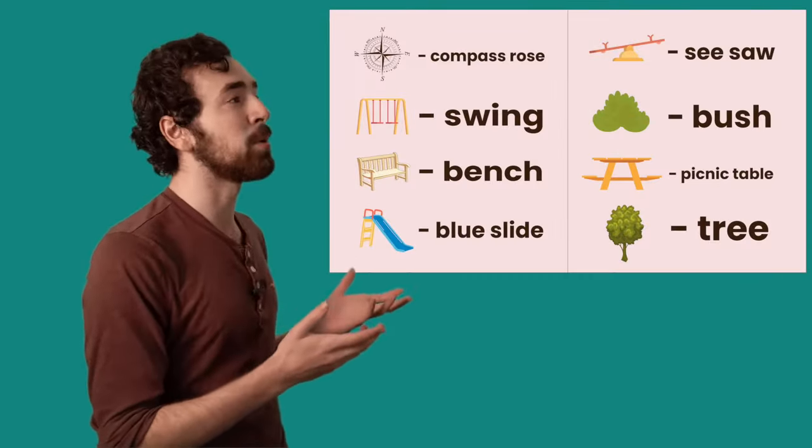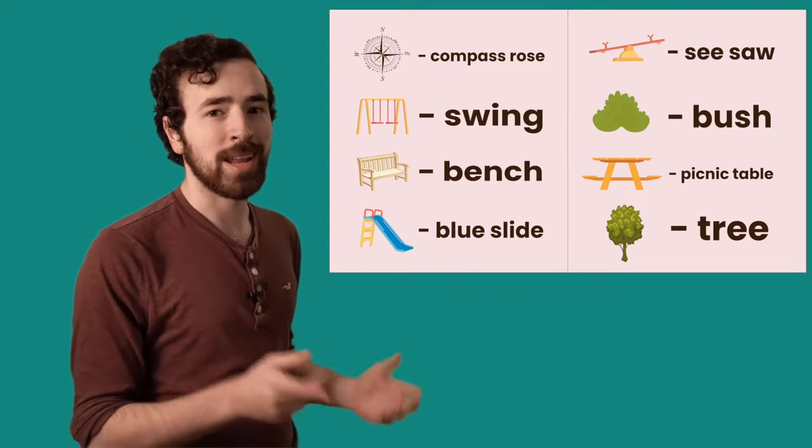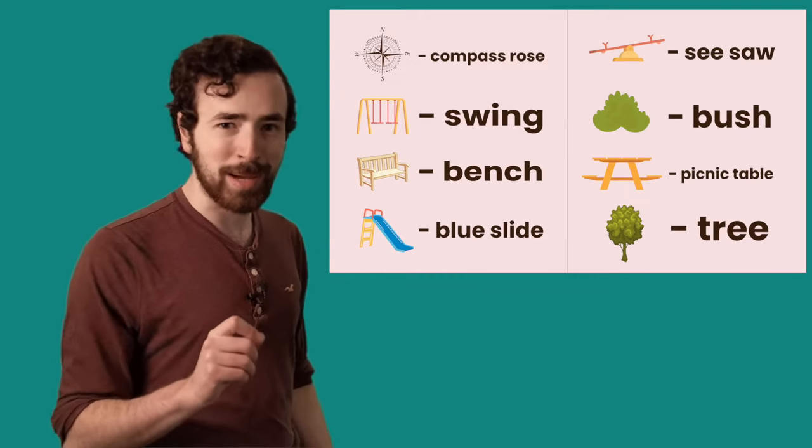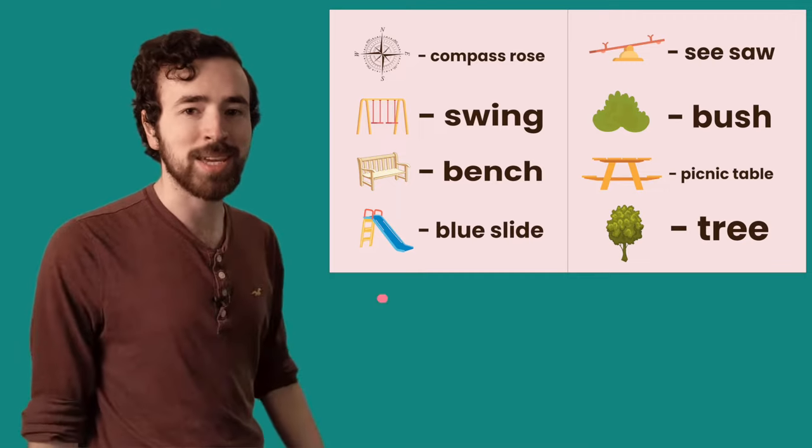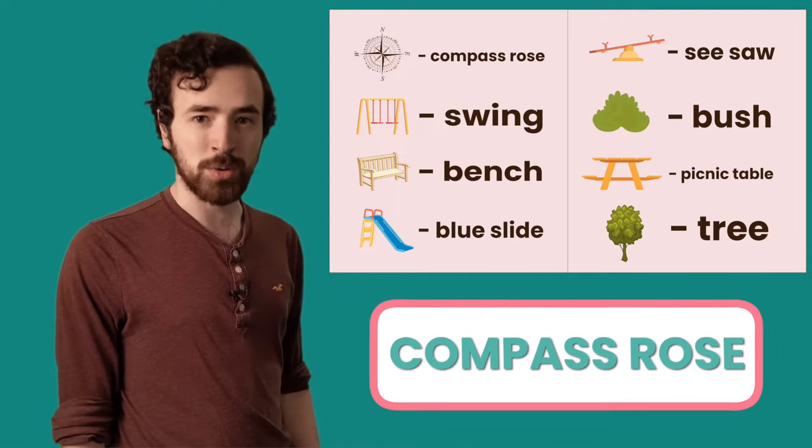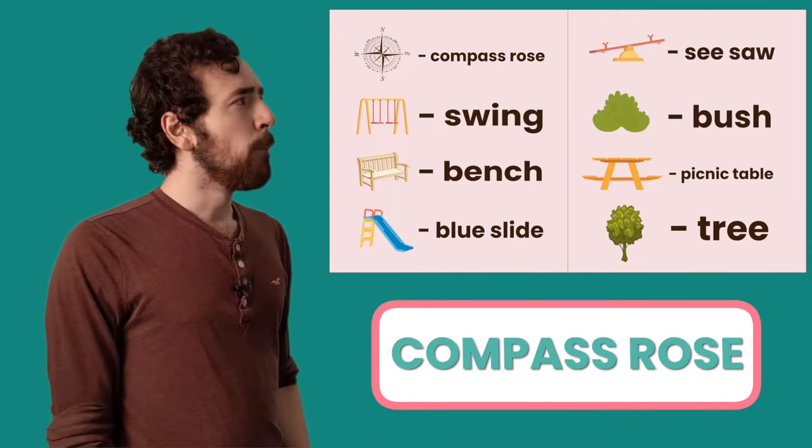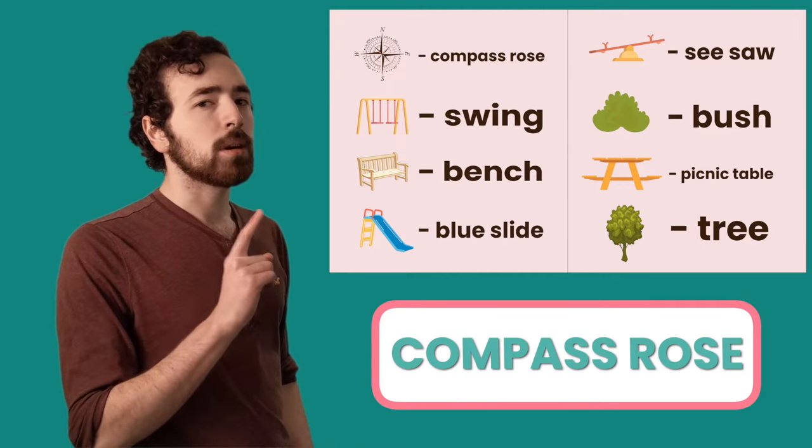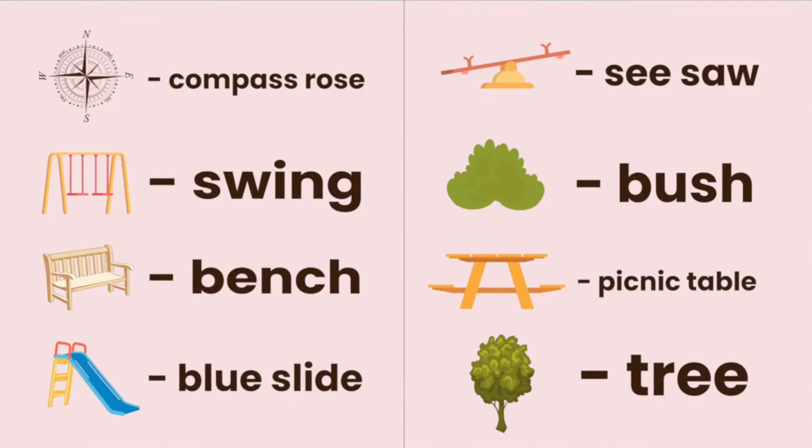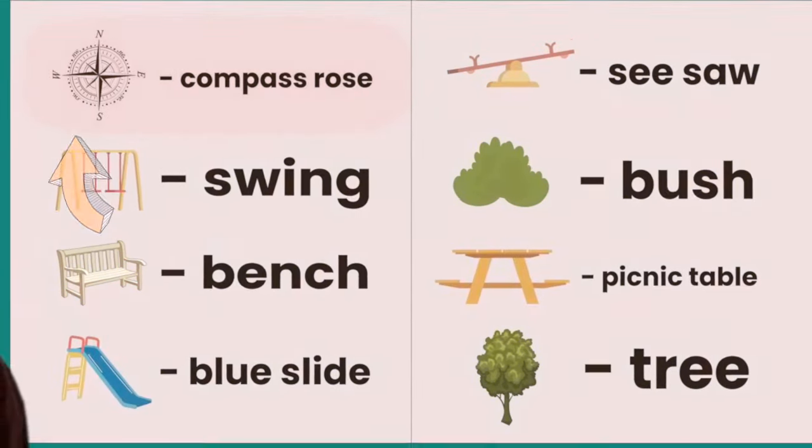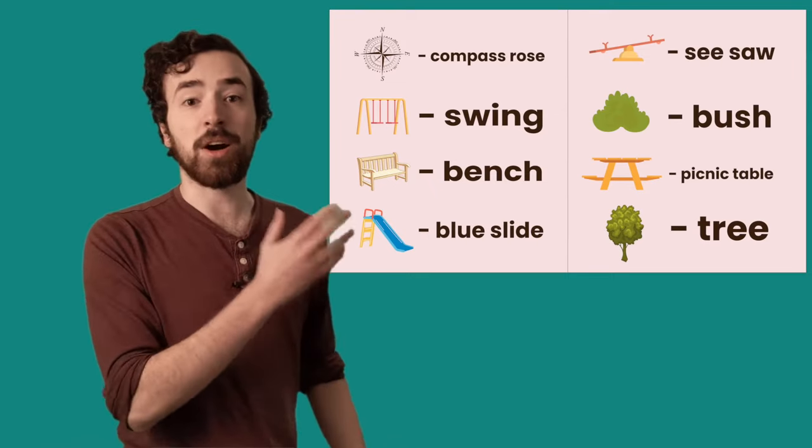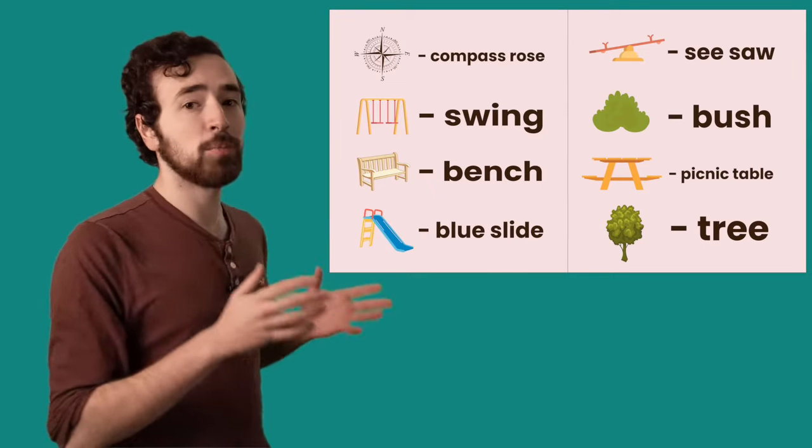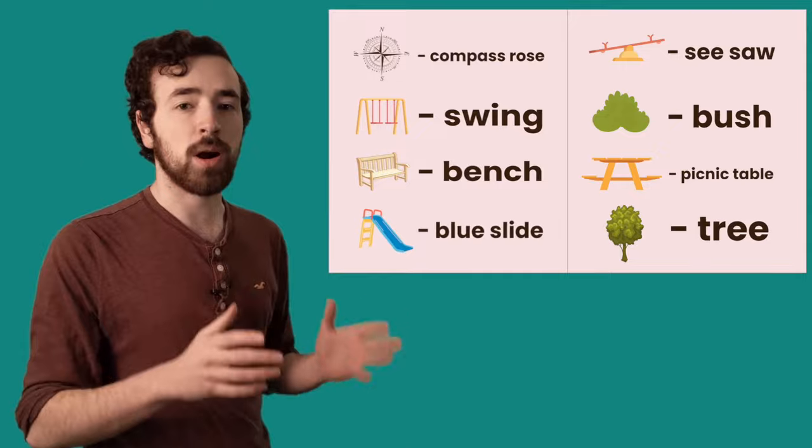This is an example of a map key. Now you already know a fancy map skill word that's on this map key, the compass rose. Can you help me find the compass rose on this map key? Oh, there it is. Thanks. Now let's look at some of the other symbols. These are special places and things that are on the map.